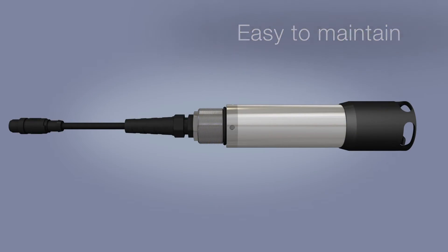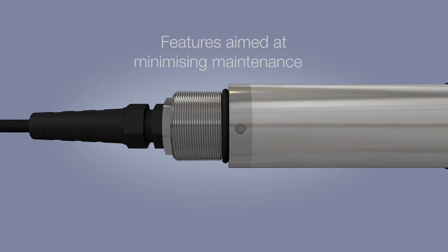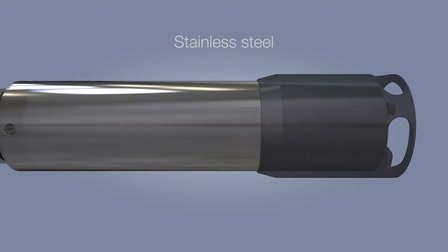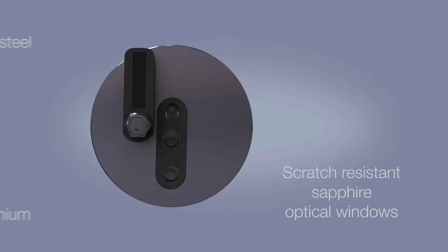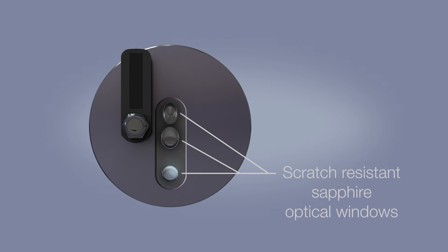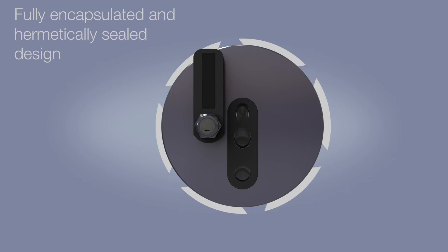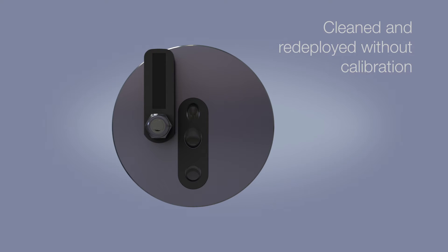The ATS-430 sensor incorporates a range of features aimed at minimizing maintenance throughout its operational life. The robust sensor probe is available in polished stainless steel or titanium and features scratch-resistant sapphire optical windows to withstand the harshest environments and pressures. The sensor requires no servicing throughout its life, thanks to its fully encapsulated and hermetically sealed design. When cleaning is necessary, it can be cleaned and redeployed without calibration.